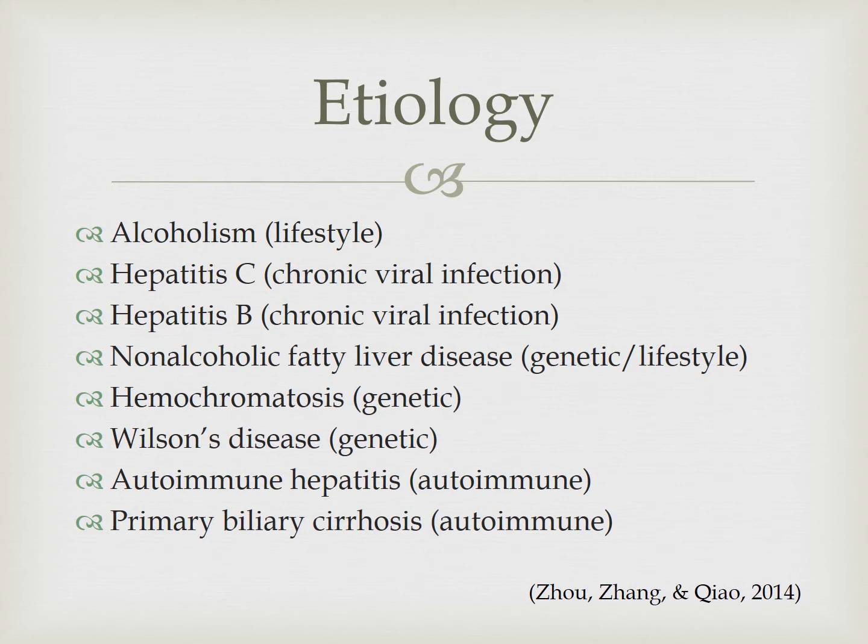Liver cirrhosis is the final result of various chronic liver diseases that cause liver fibrosis. Examples would be alcoholism, hepatitis C and B, non-alcoholic fatty liver disease, hemochromatosis and Wilson's disease, autoimmune hepatitis, and primary biliary cirrhosis.